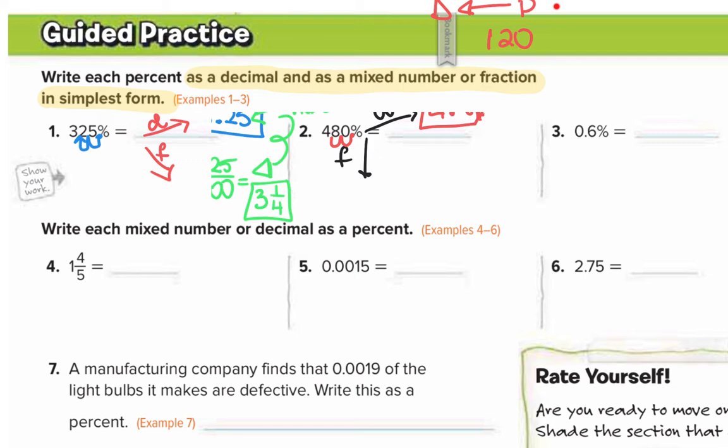Now use that to help you write your fraction. The 4 is the whole number, and the 8 is in the tenths place. So this is 4 and 8 tenths, which simplifies to 4 and 4 fifths.